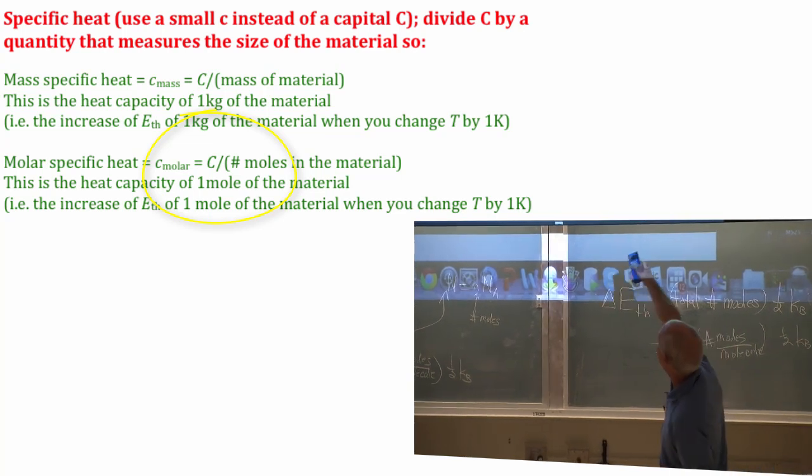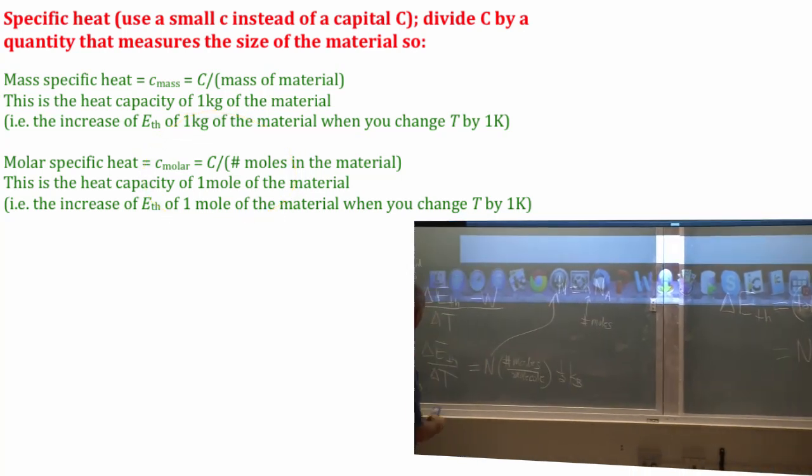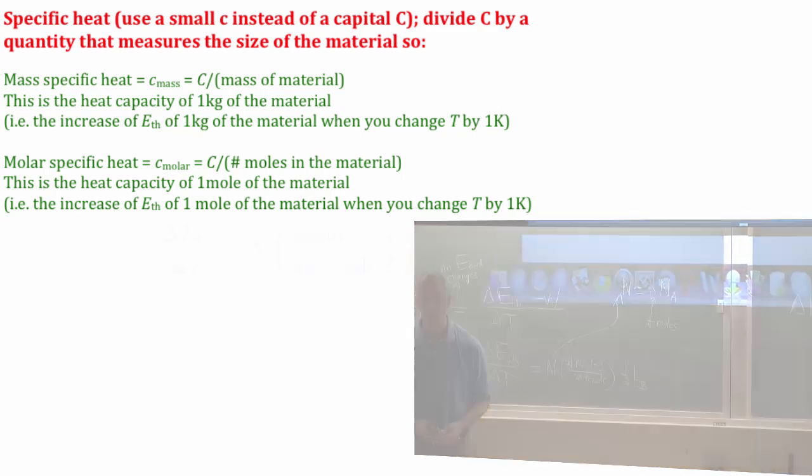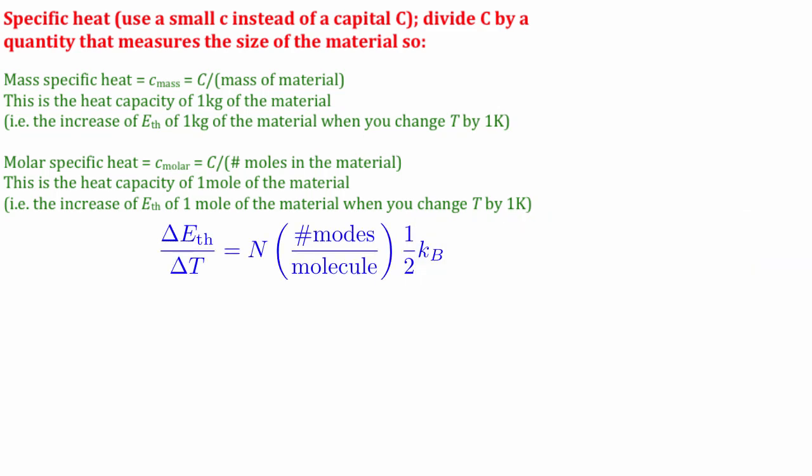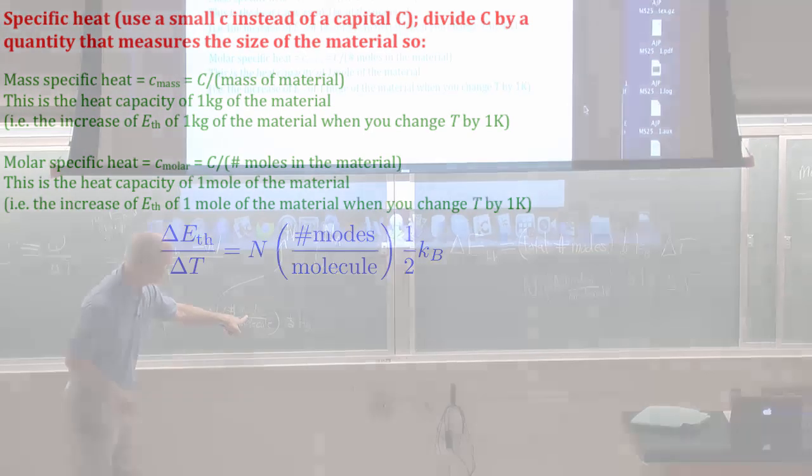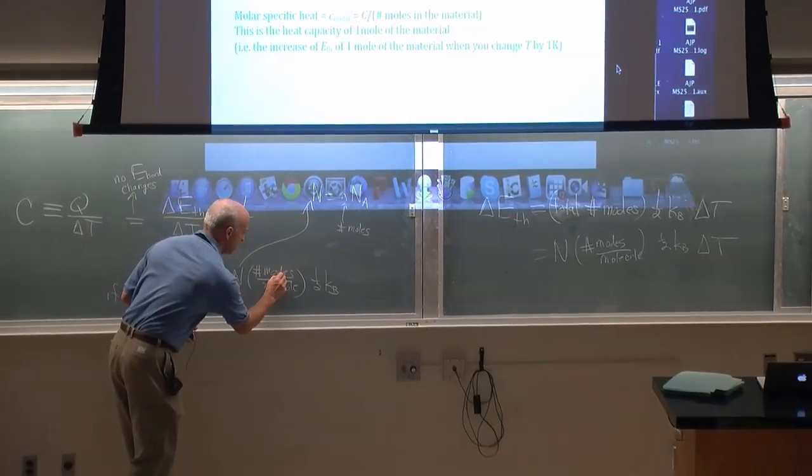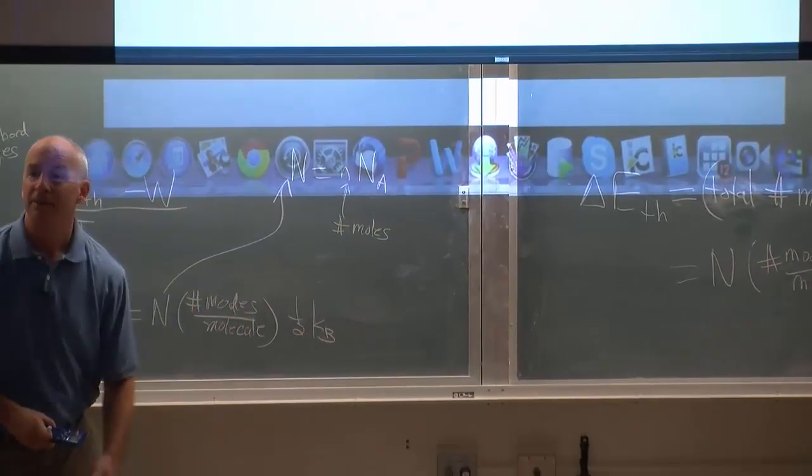Then this is little n number of moles times Avogadro's number. And if I divide, if I want to find the molar specific heat, I would, down here, the molar specific heat is the heat capacity divided by the number of moles. So the molar specific heat, I would divide by this little n.